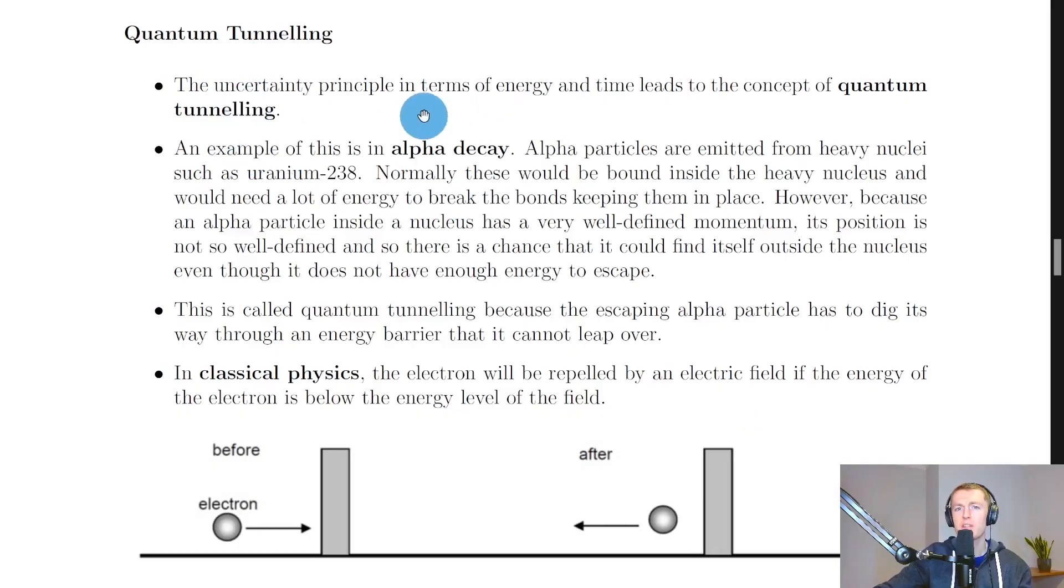The uncertainty principle in terms of energy and time leads to the concept of quantum tunnelling. An example of this is in alpha decay, which you would have seen in higher physics. In alpha decay, alpha particles are emitted from heavy nuclei such as uranium-238. Normally these would be bound inside the heavy nucleus and would need a lot of energy to break the bonds keeping them in place.